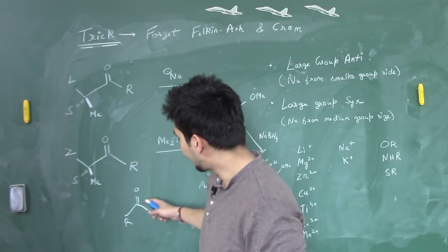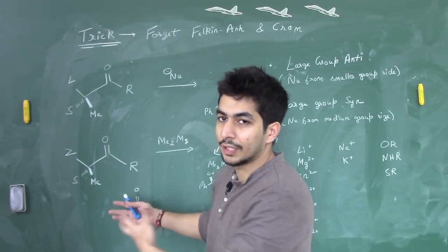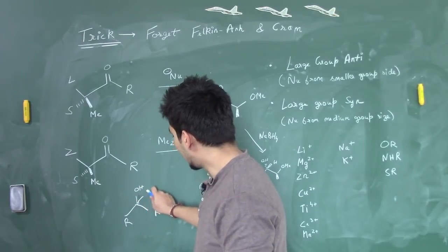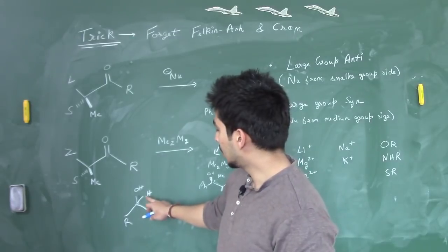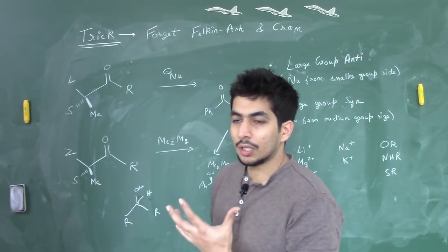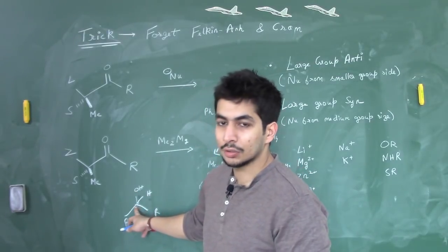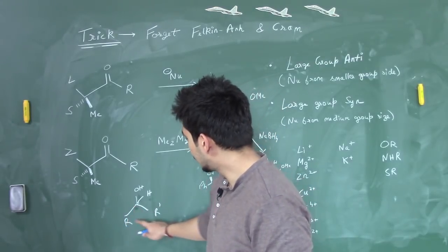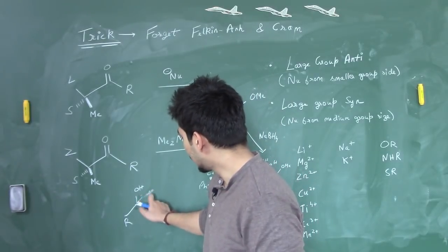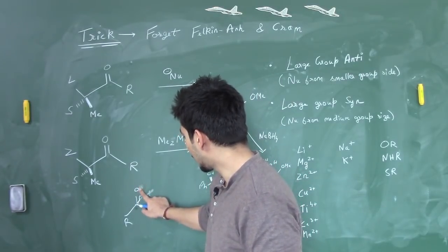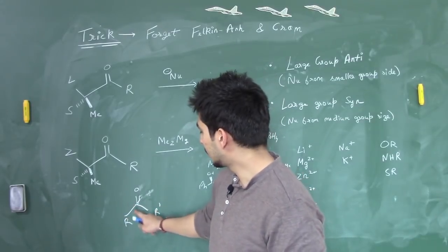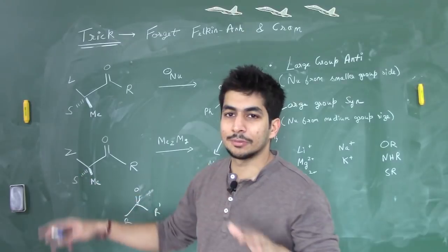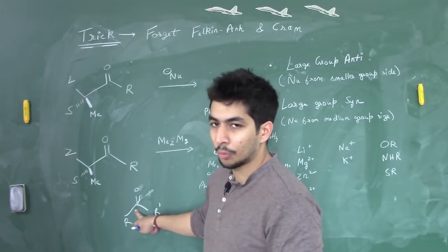If nucleophilic addition takes place — say a hydride reduction — the carbonyl turns into OH and hydrogen. If the two R groups are the same, the stereochemistry of that carbon doesn't matter. But if the two R groups are different, the ketone becomes a pro-chiral center. Once hydrogen attaches, there will be four different substituents, making it a chiral center.